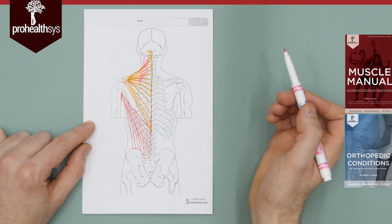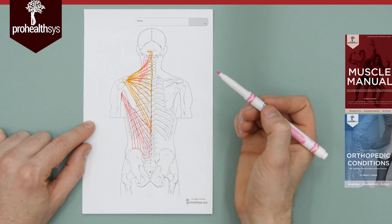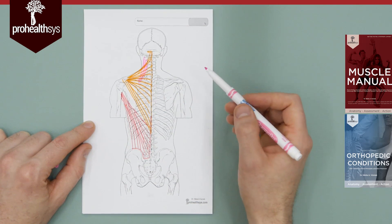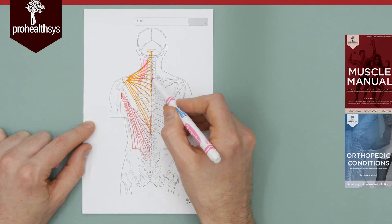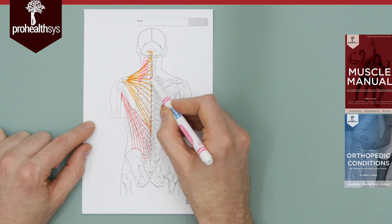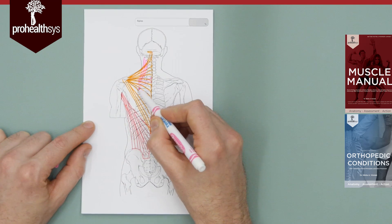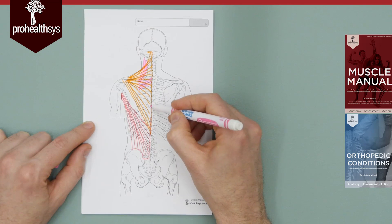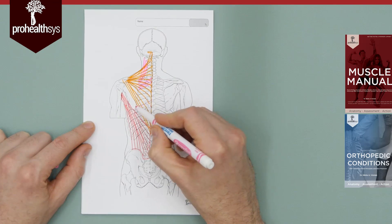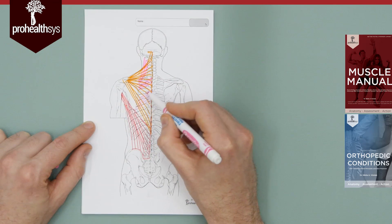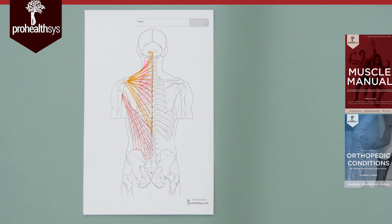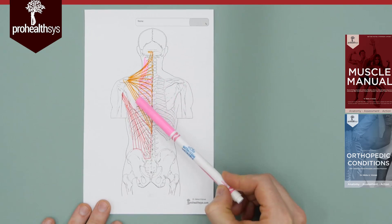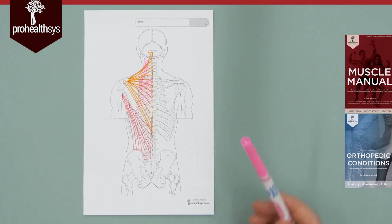We're on the medial border of the scapula, so let's do rhomboids — rhomboid minor and major. For rhomboid minor: C7 to T1, and T1 to T2. For rhomboid major: T2 to T5. There's some variation. The main action of the rhomboid muscles is retraction of the scapula. They also elevate a little bit and help with downward rotation because of the way the fibers run.